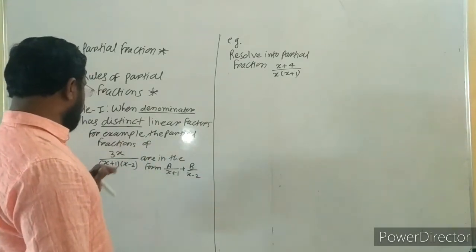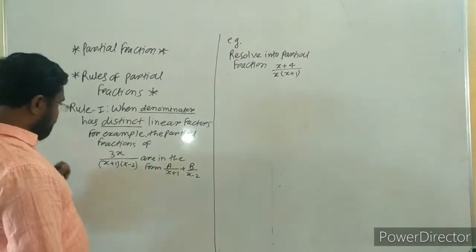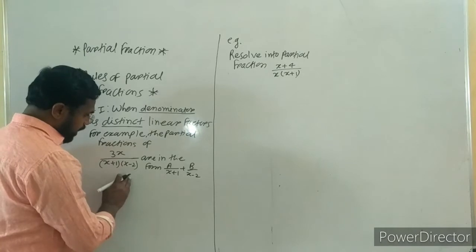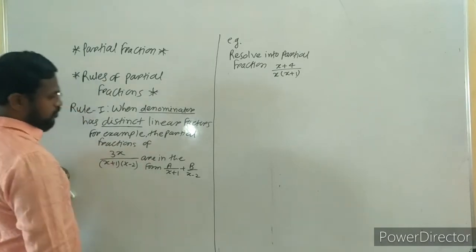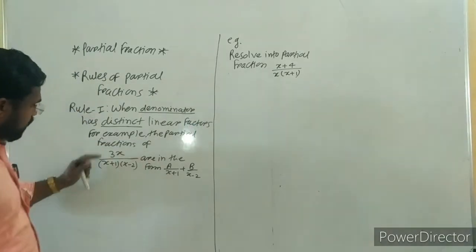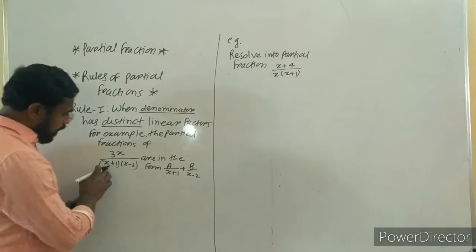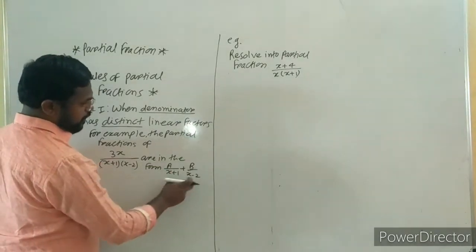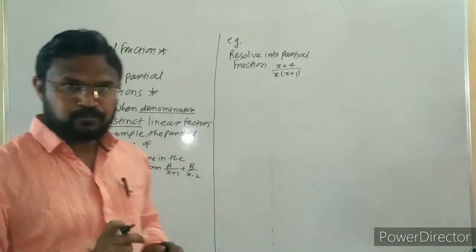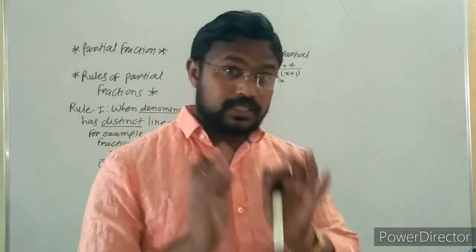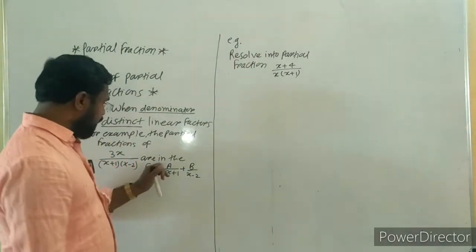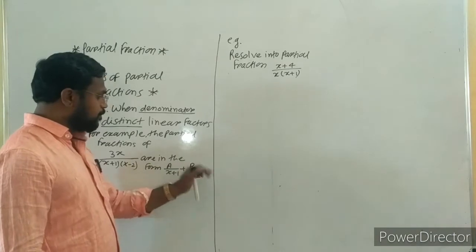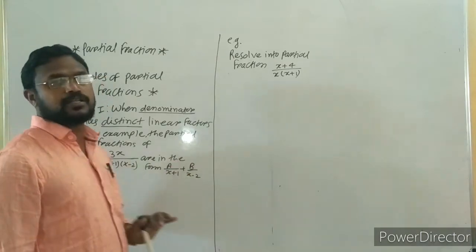For example, the partial fractions of 3x upon (x+1)(x-2) are in the form: A upon the first bracket plus B upon the second bracket. If there are three brackets, it would be A upon the first bracket plus B upon the second bracket plus C upon the third bracket.